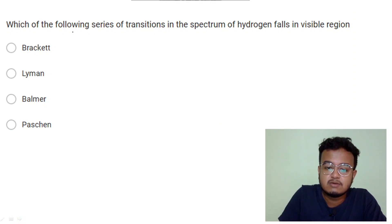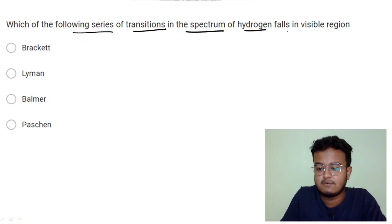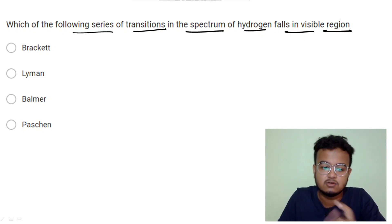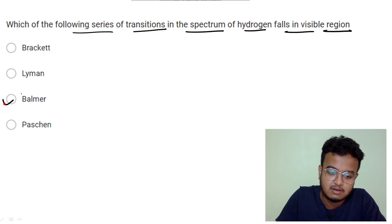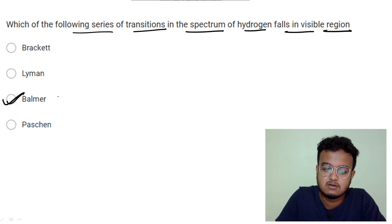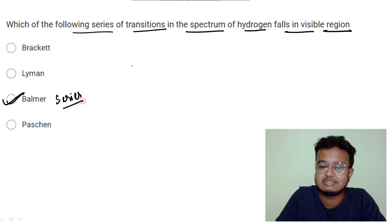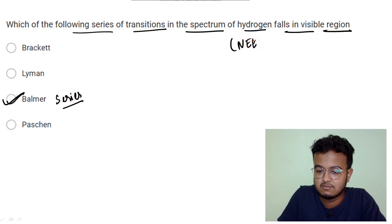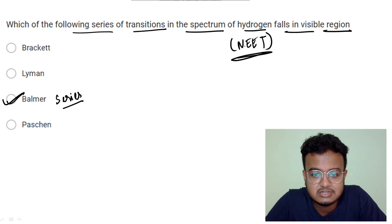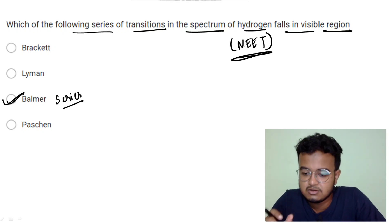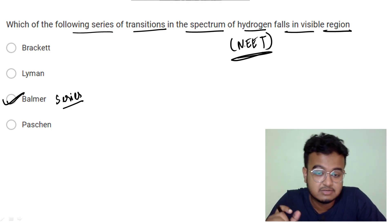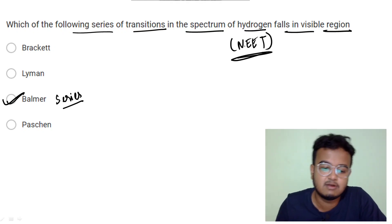Next: which of the following series of transitions in the spectrum of hydrogen falls in the visible region? The visible region corresponds to the Balmer series — I don't need to say more; the visible series answer is the Balmer series.